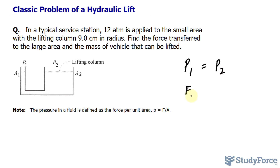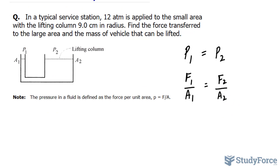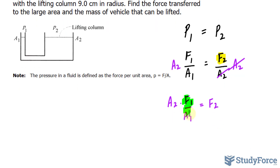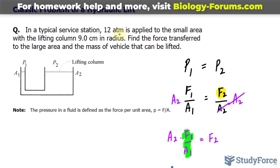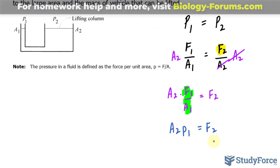What I will do is say that the pressure P1 is equal to the pressure at P2 — the pressure should remain the same within this container. Pressure is equal to force, so F1 over area A1 equals F2 over its area A2. What we're looking for is the force, so I'll solve for F2 algebraically by multiplying both sides by A2. This cancels out, giving us A2 times F1 over A1 equals F2. This part right here equals P1, so I'll replace that with P1 since the pressure is 12 atmospheres.